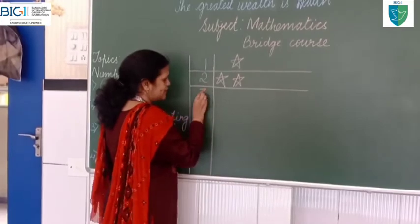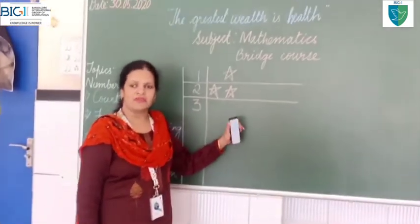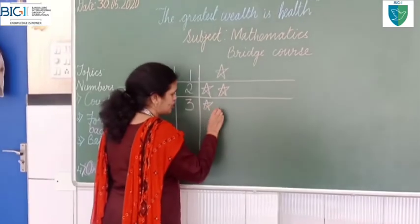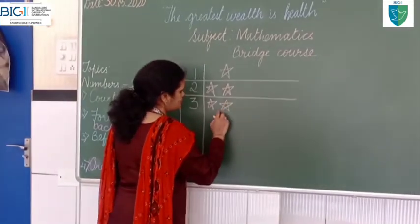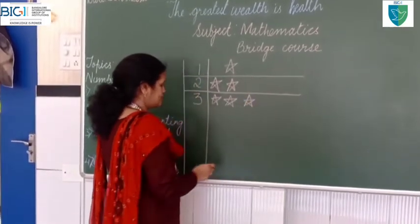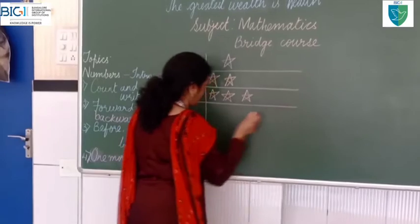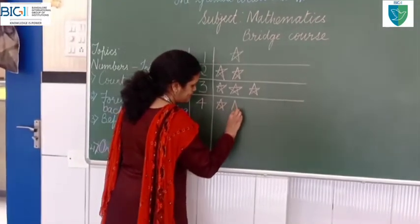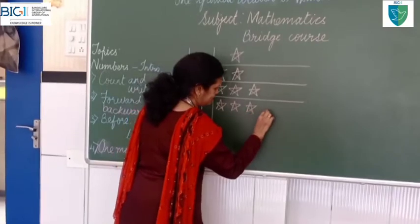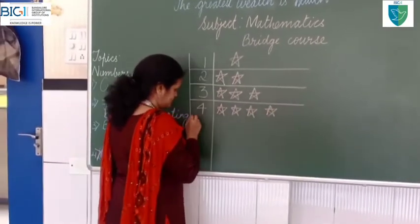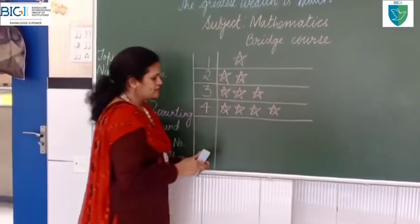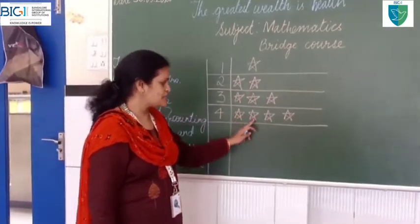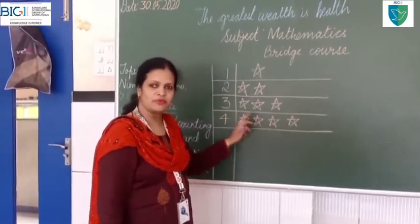Now, number three. What are we doing? We are writing a number and drawing the same number of objects to show its value. Number three means I have to count and draw three stars: one, two, three. Number four — I have to draw four stars: one, two, three, four. Each time you can see the number of stars I have drawn, which shows you the number. There are four stars here — that means it is showing you the number four.